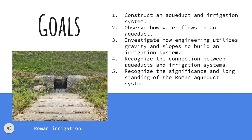Goals of this project: construct an aqueduct and irrigation system; observe how water flows in an aqueduct; investigate how engineering utilizes gravity and slopes to build an irrigation system; recognize the connection between aqueducts and irrigation systems; and recognize the significance and longstanding nature of the Roman aqueduct system.